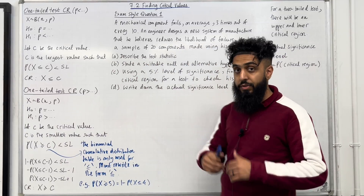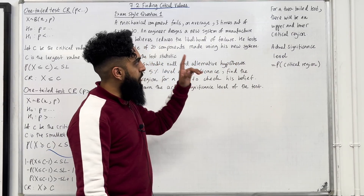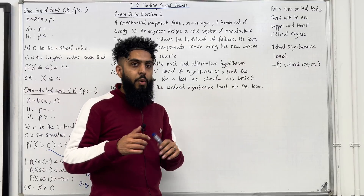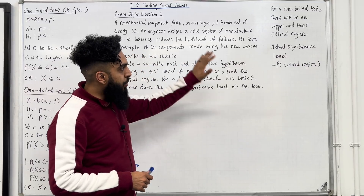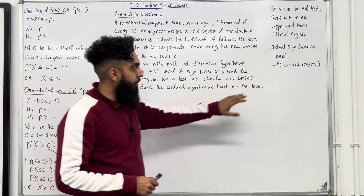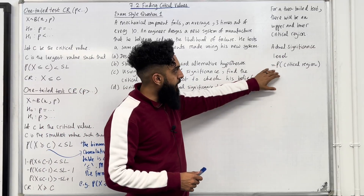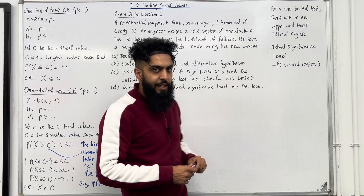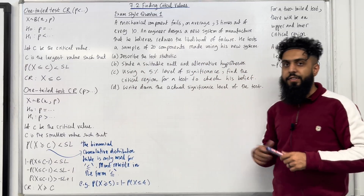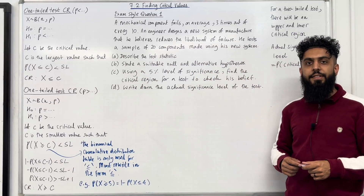Now let's move on to the other key parts of this section. For a two-tail test, there will be an upper and lower critical region. To work out the actual significance level of the test, we take the probability of the critical region — that is the definition of the actual significance level. These are the key facts of 7.2 finding critical values, and I'll be implementing them in exam-style questions.